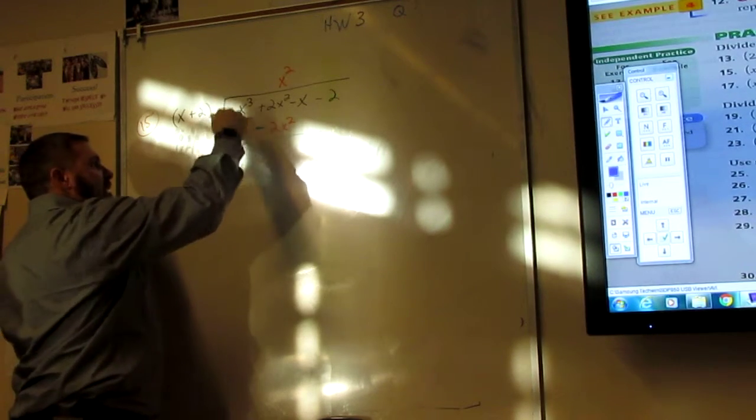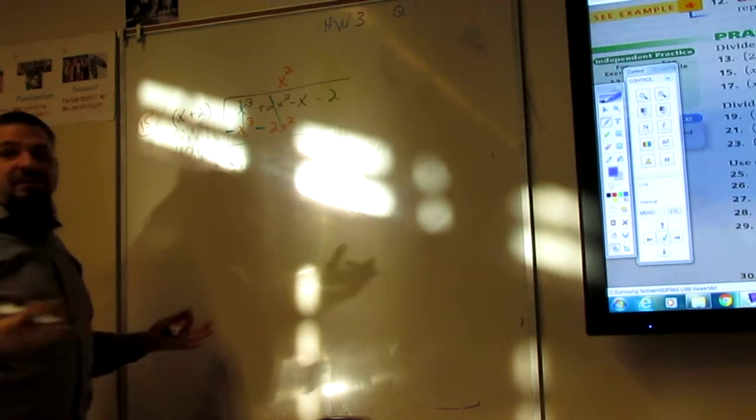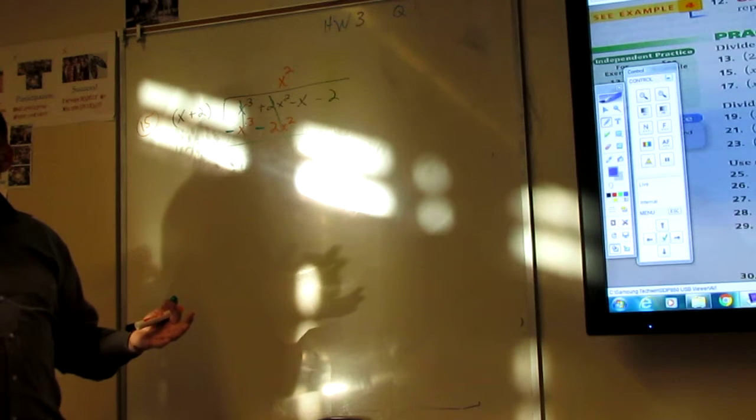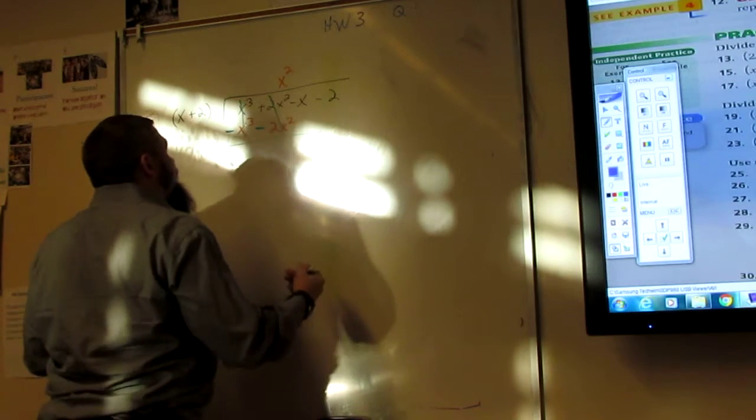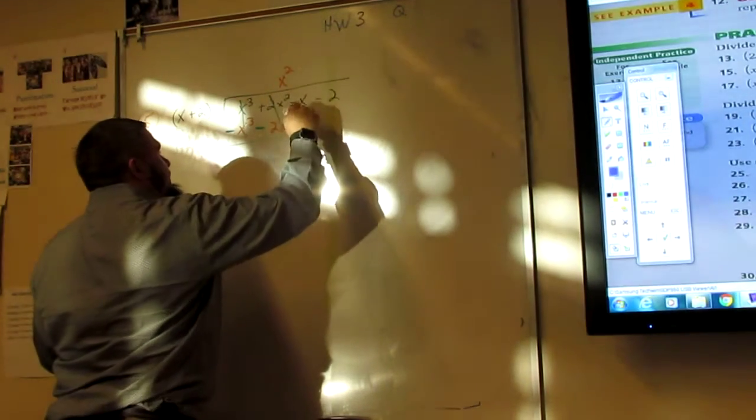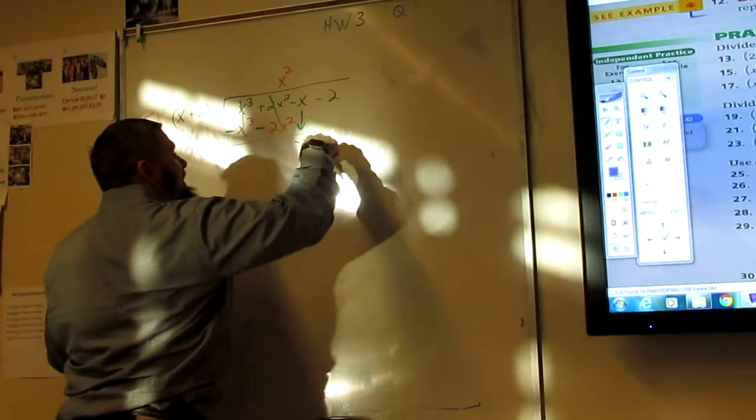So here I draw the line and I change the sign. And then it's nice and neat. Adding this negative, bam, this negative, bam. So I got nothing. So then I bring this down and I bring this down.